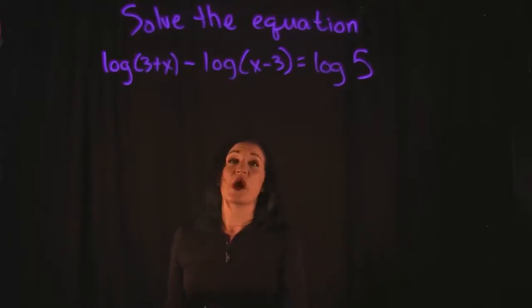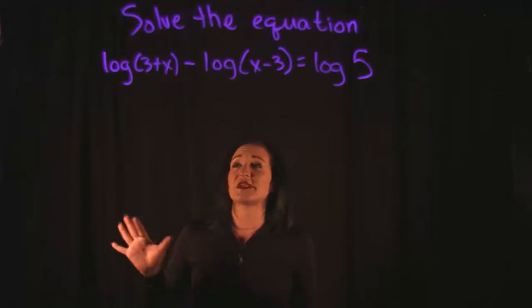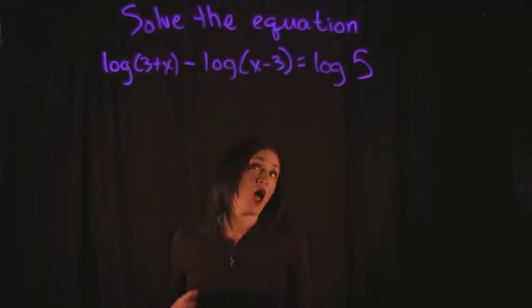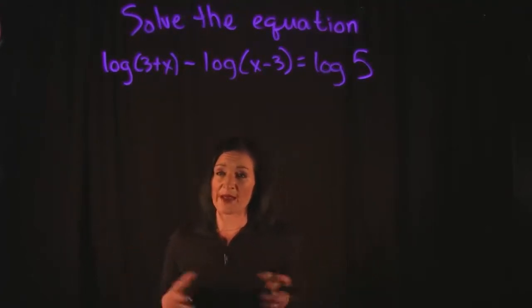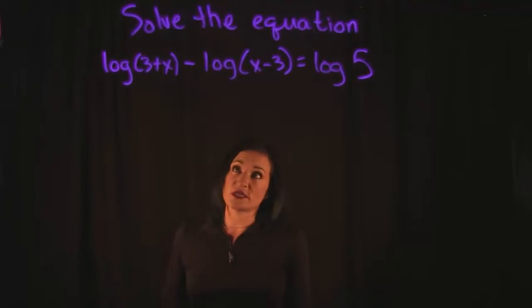So taking a look at this problem on the left-hand side, I see that I have log of 3 plus X minus log of X minus 3, and what I want to do with this equation is try and simplify it a little bit. I want to try and combine it, reduce it a little bit, because taking a look at what I have right now there's not a whole bunch I can do here. I don't want to move things around to either side of the equation. I kind of want to compact it a little bit more.